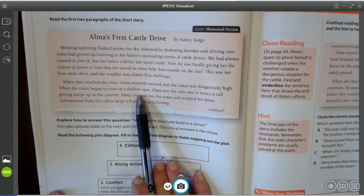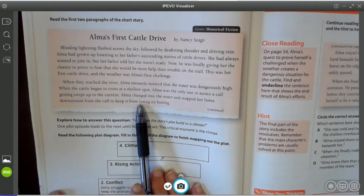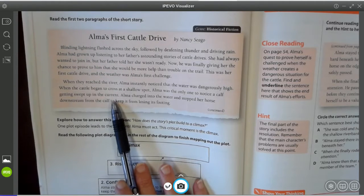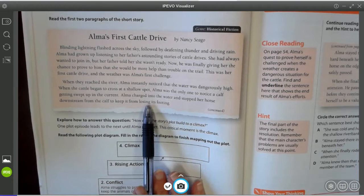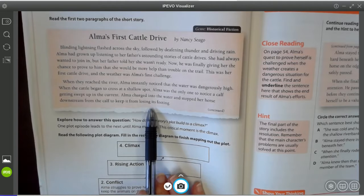When they reached the river, Alma instantly noticed that the water was dangerously high. When the cattle began to cross at a shallow spot, Alma was the only one to notice a calf getting swept up in the current. Alma charged into the water and stopped her horse downstream from the calf to keep it from losing its footings.